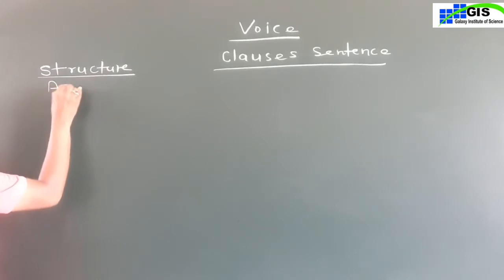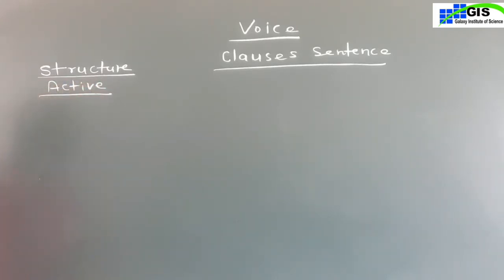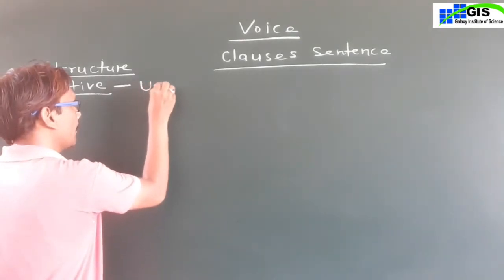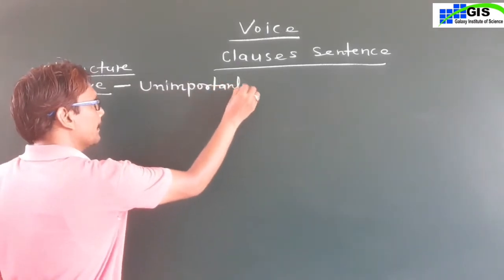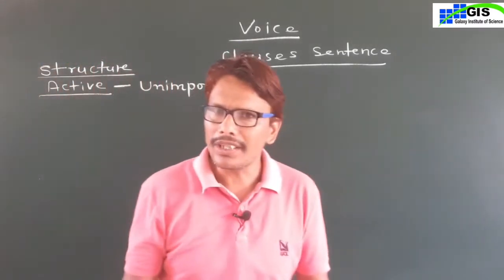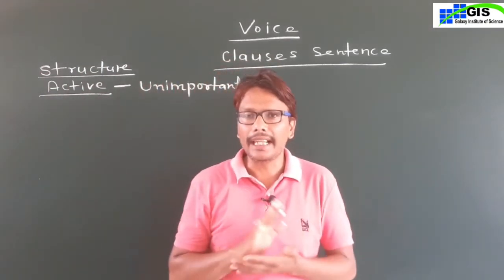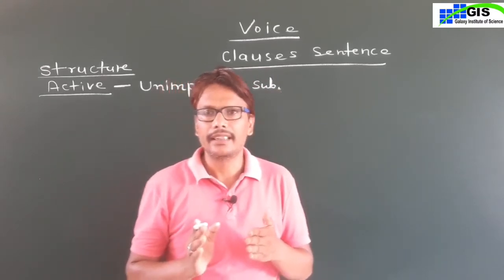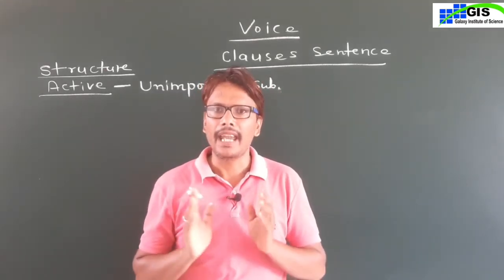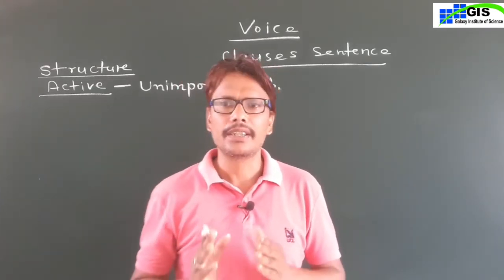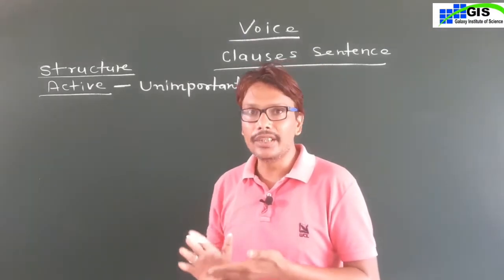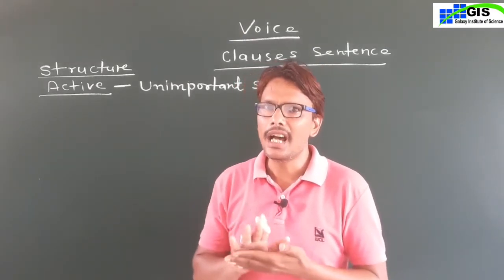What is the structure of active voice and passive voice? Dear students, in active voice, first of all, you will get an unimportant subject. What are the unimportant subjects? In active voice, if you find a subject as: they, we, people, all, all people, everyone, everybody, no one, nobody, someone, somebody — these are known as unimportant subjects.